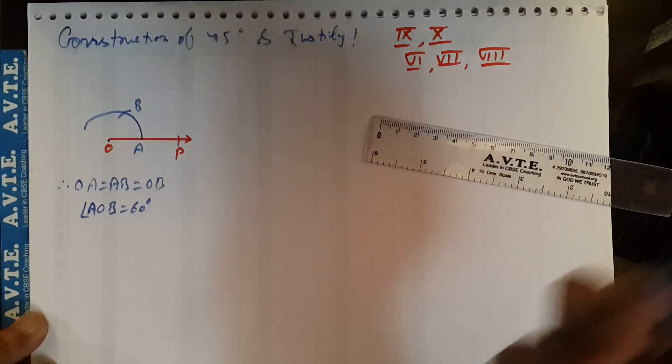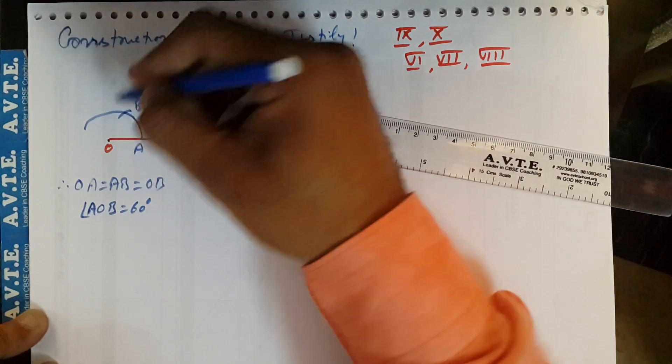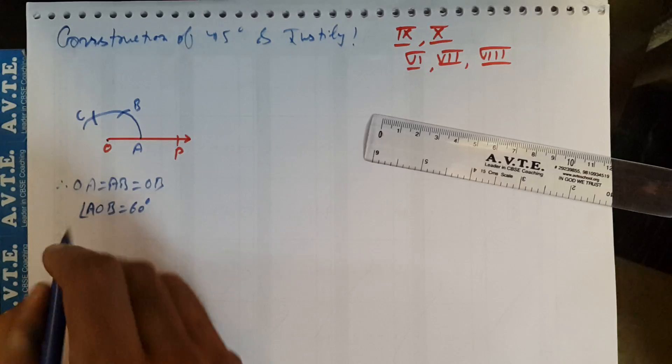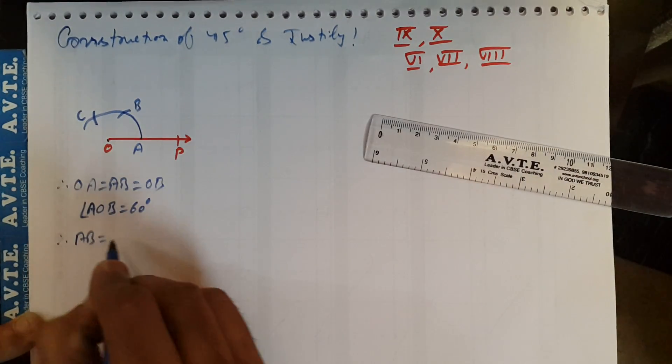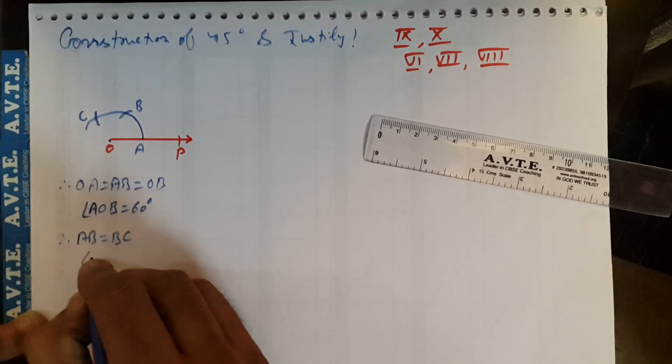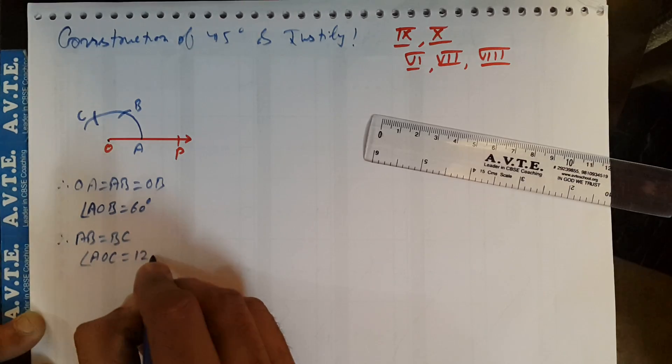With the same radius, you can cut on the same arc like this. It means your AB is equal to BC. So your angle AOC will be 120 degrees.